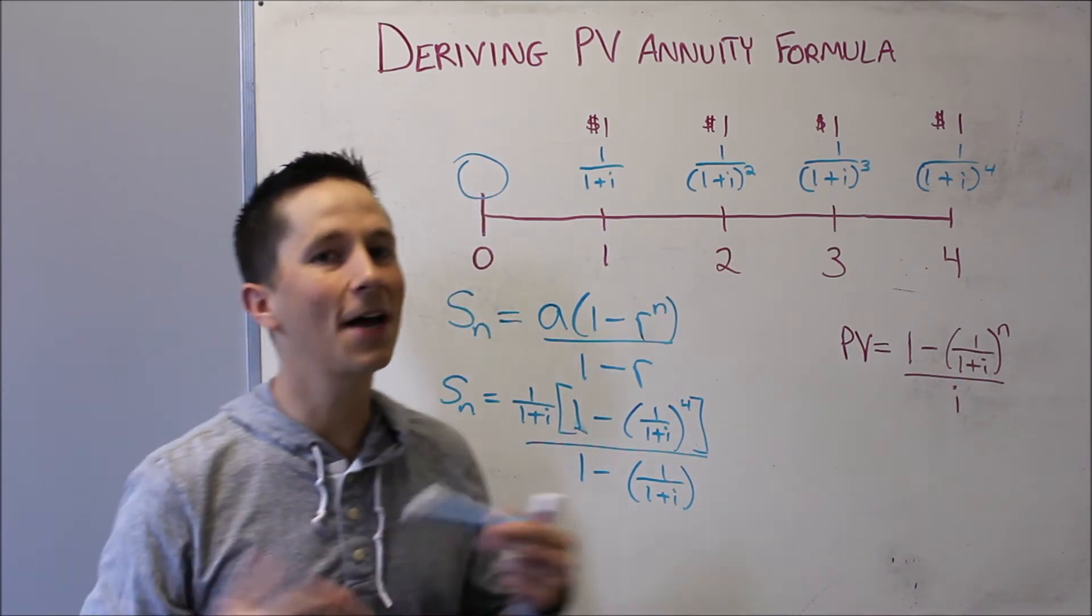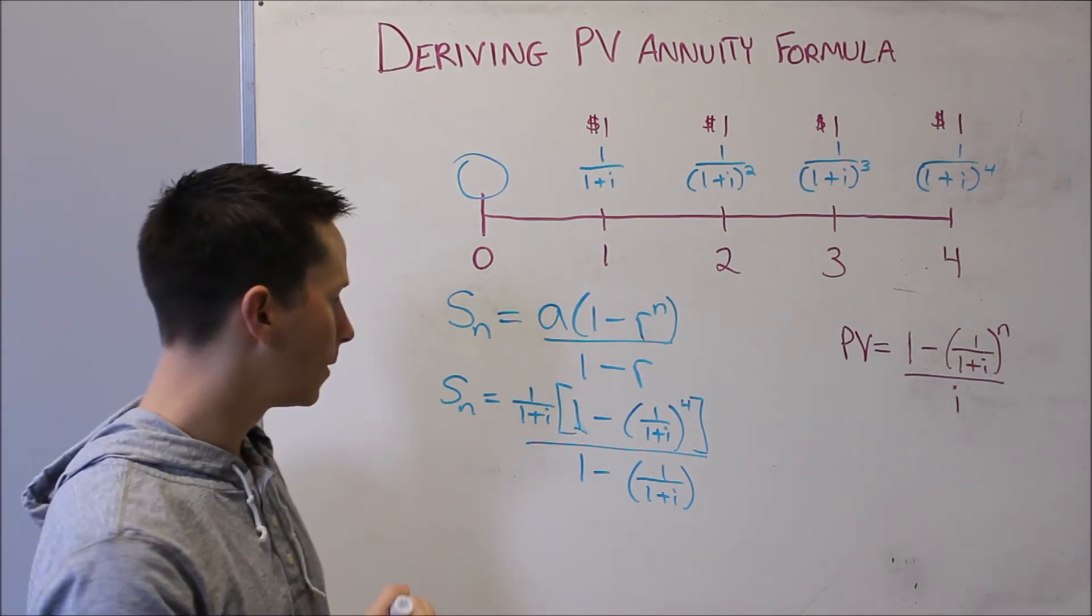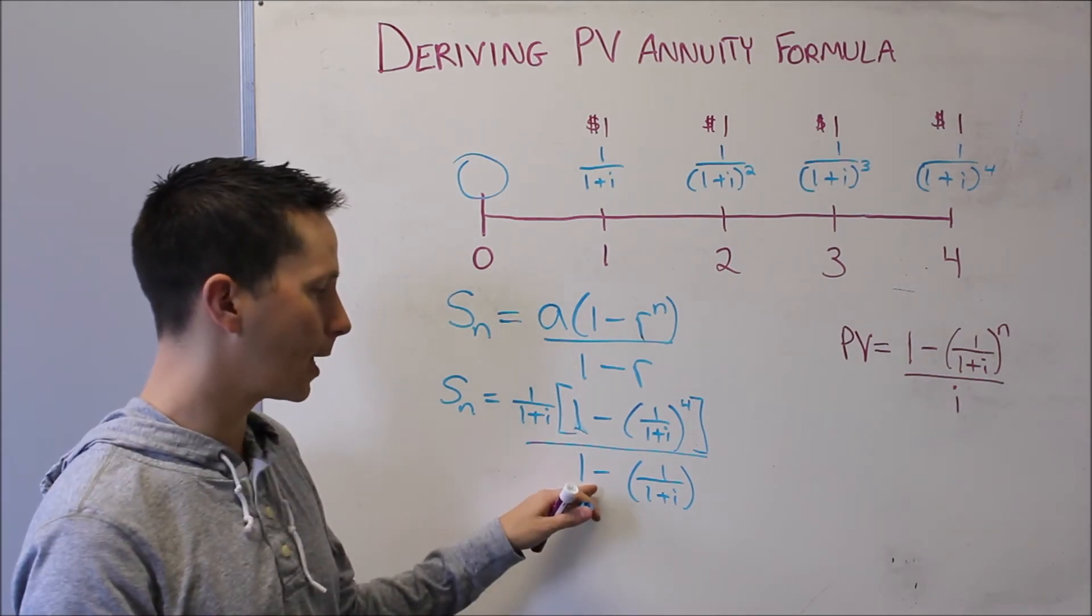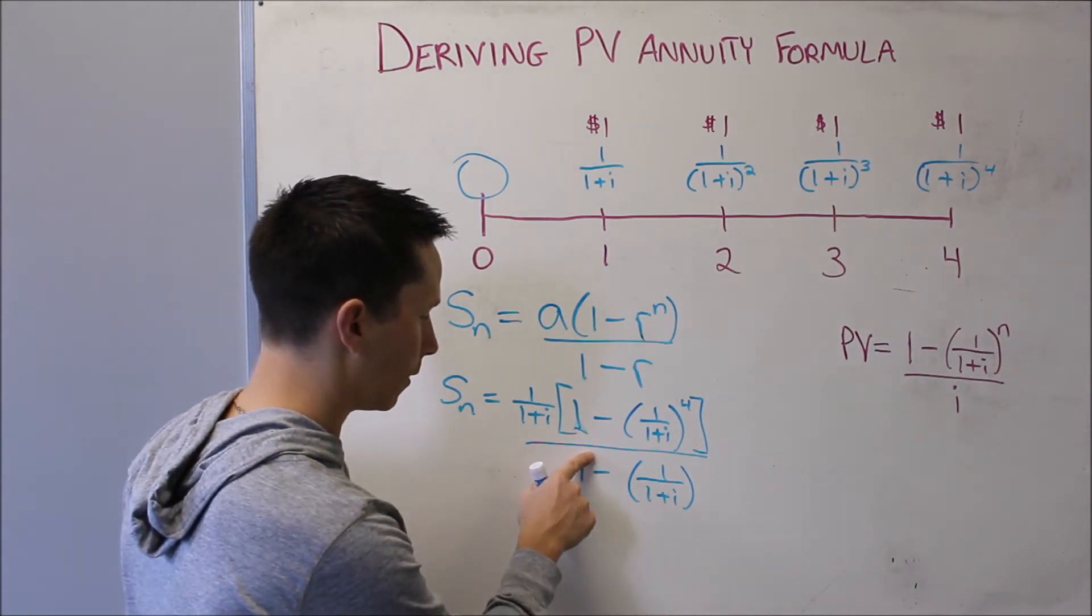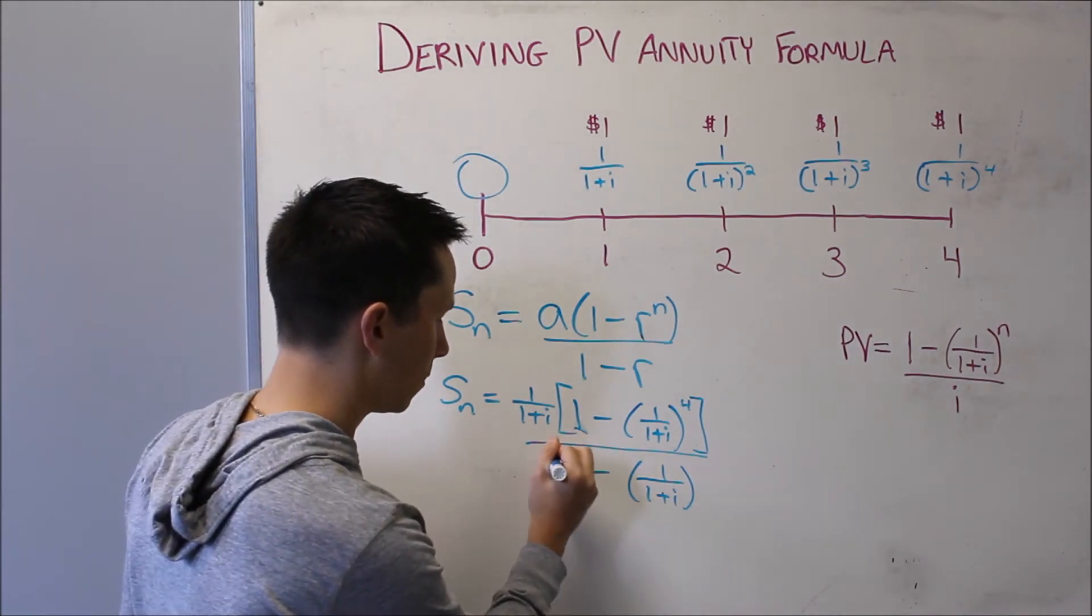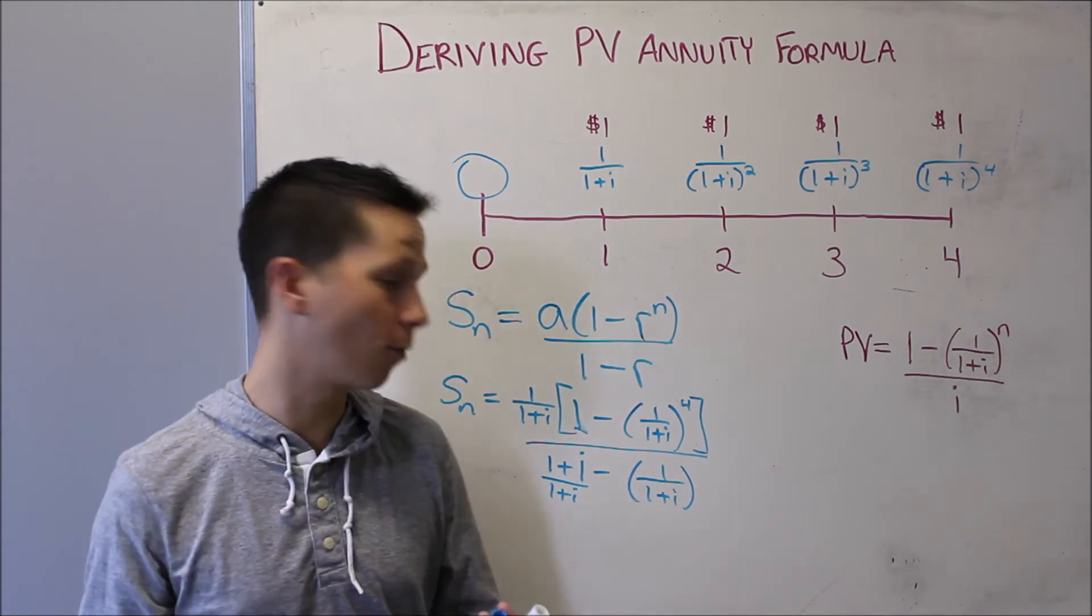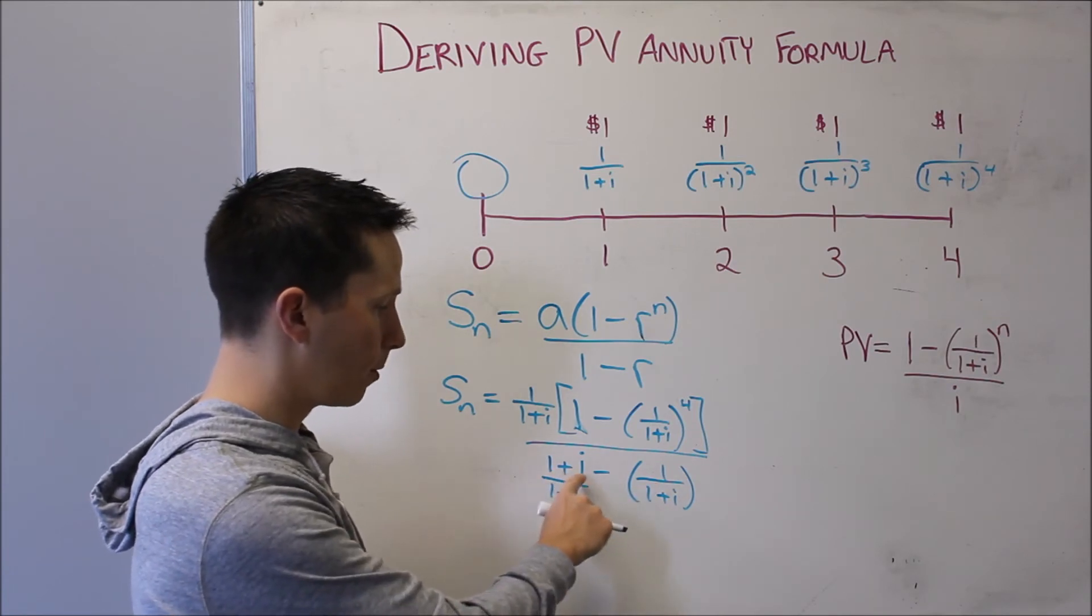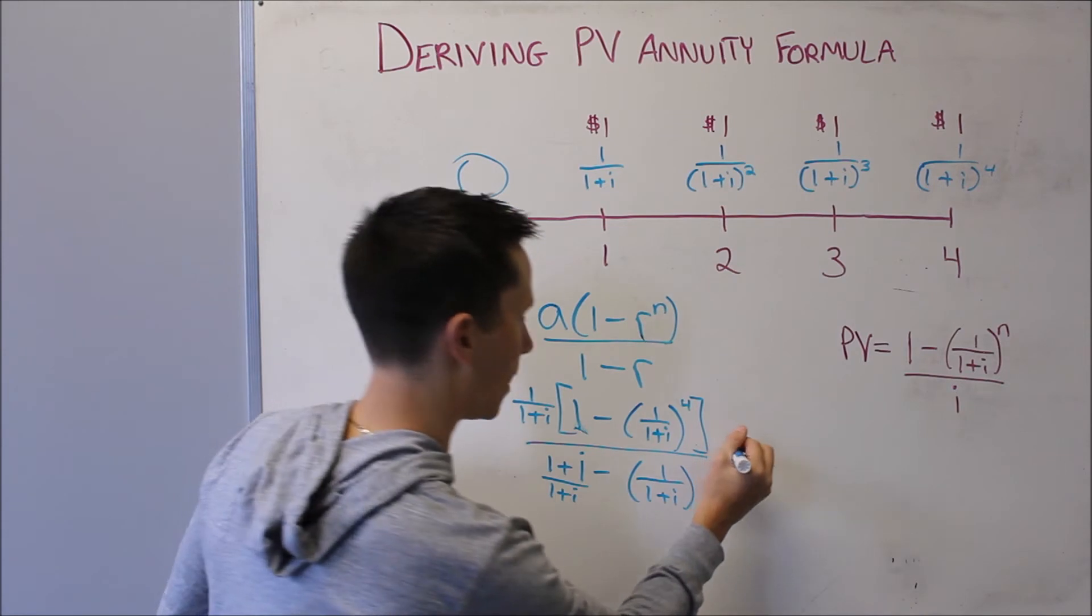So this looks kind of messy right now, but we can see how we can pretty quickly clean it up. If I take the bottom and I get it over a common denominator, this becomes 1 plus i over 1 plus i, because it was just 1 before. Now we can subtract on the bottom, we get 1 plus i minus 1 on top is just i over 1 plus i. So the top stays the same.